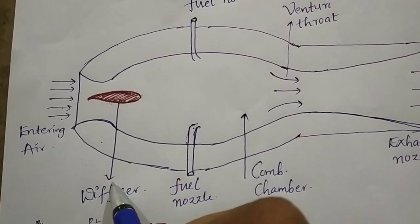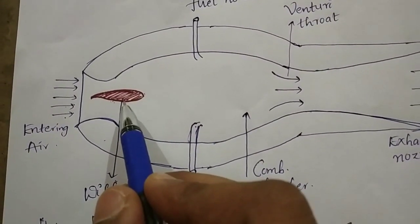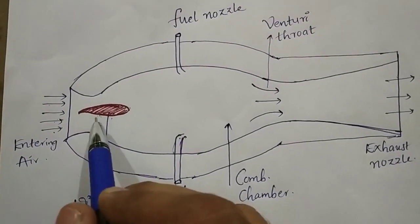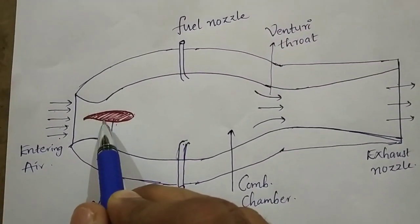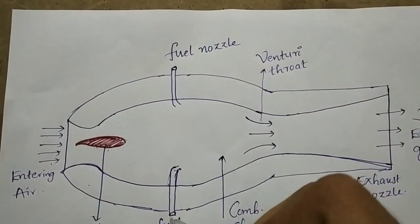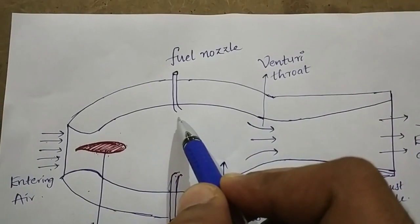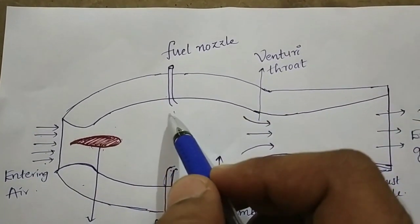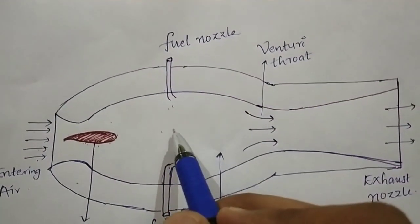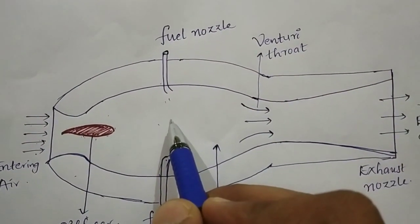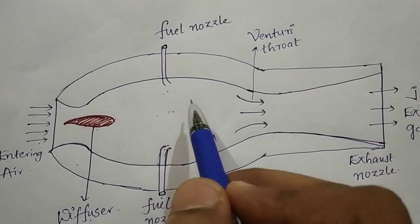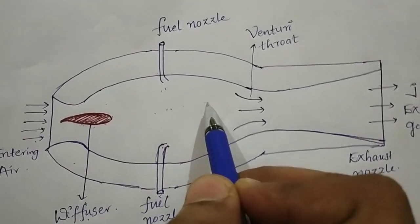Here we are not using the compressor; in place of the compressor we are using the diffuser. The diffuser increases the pressure of the atmospheric air. There is also a fuel nozzle, and from the fuel nozzle, fuel comes out. The high pressure air and the fuel from the nozzle both mix together in the combustion chamber.